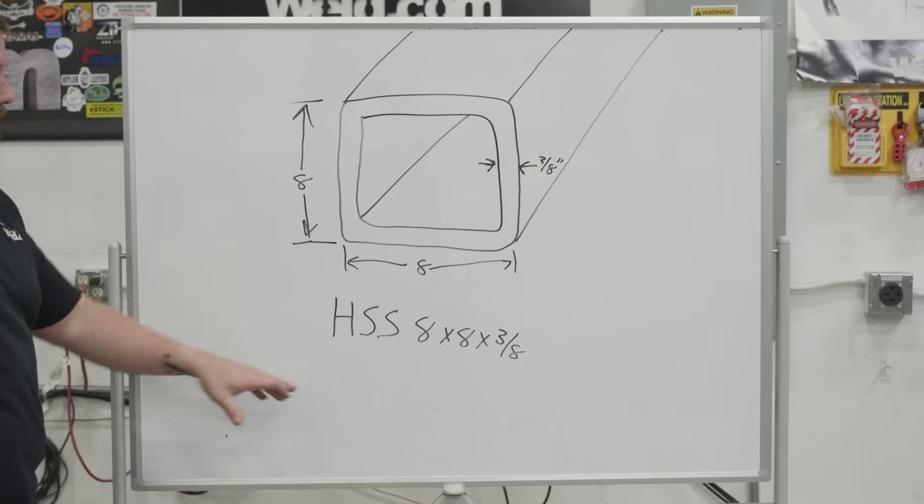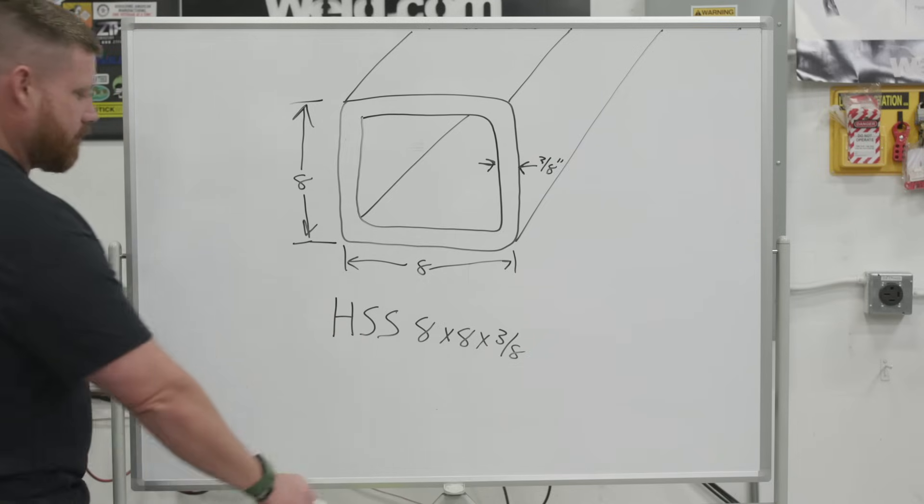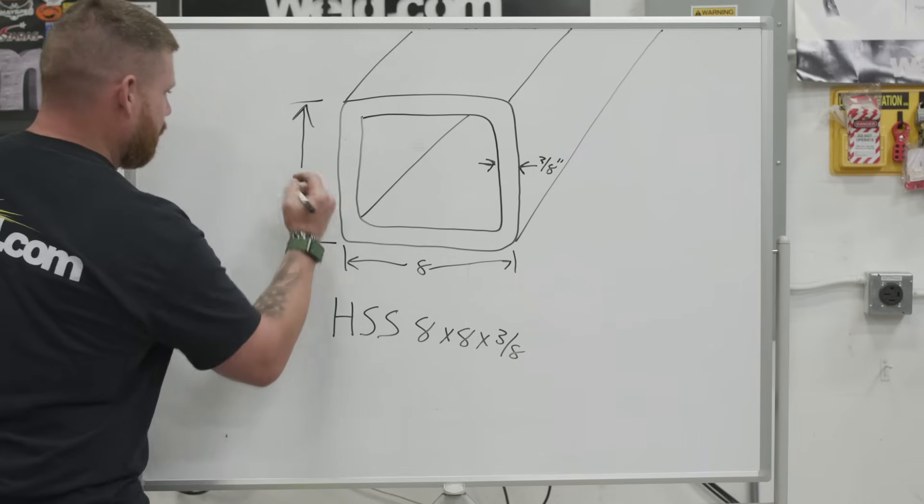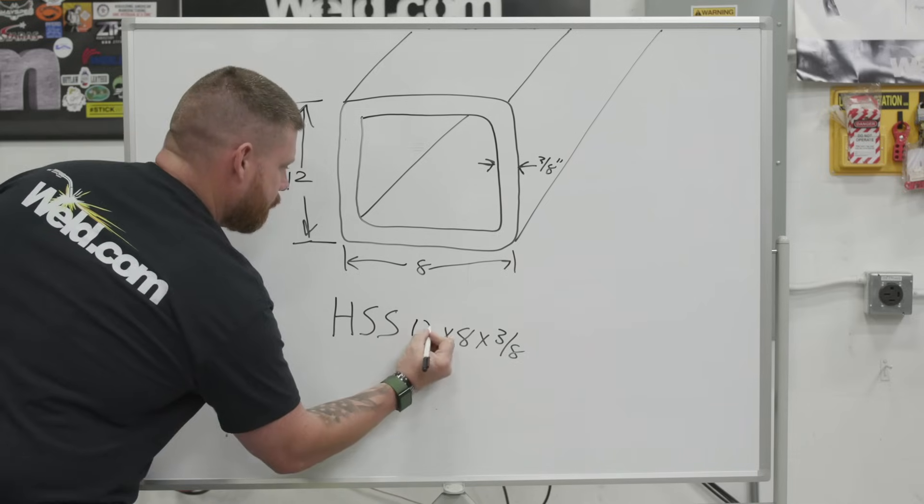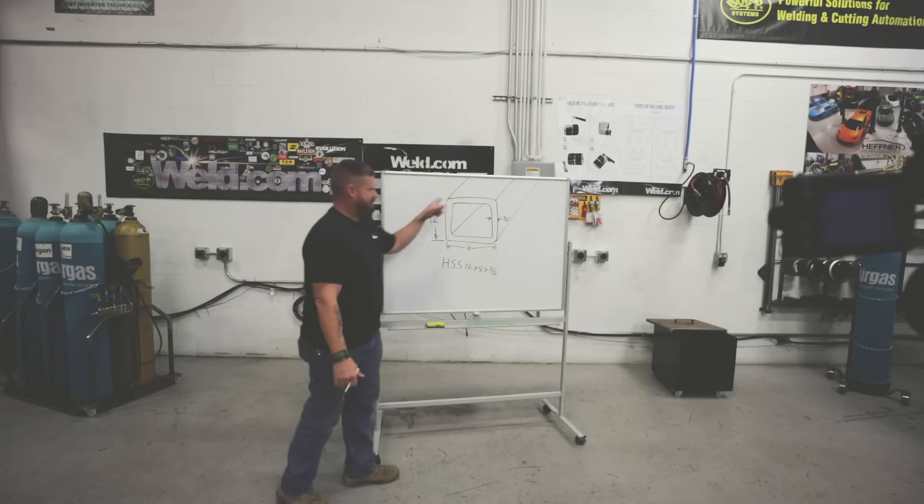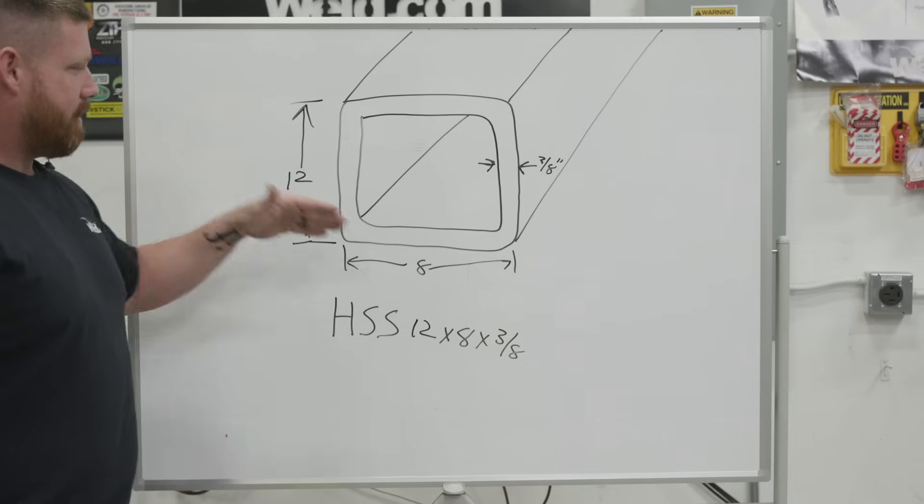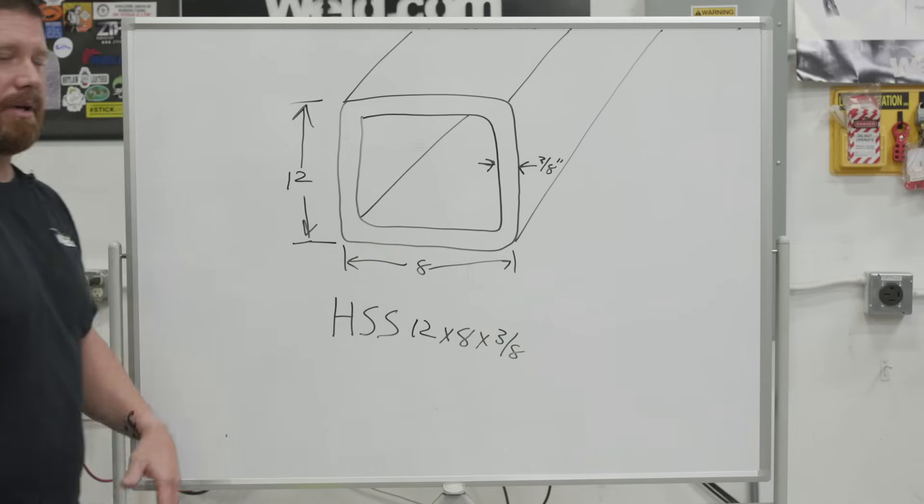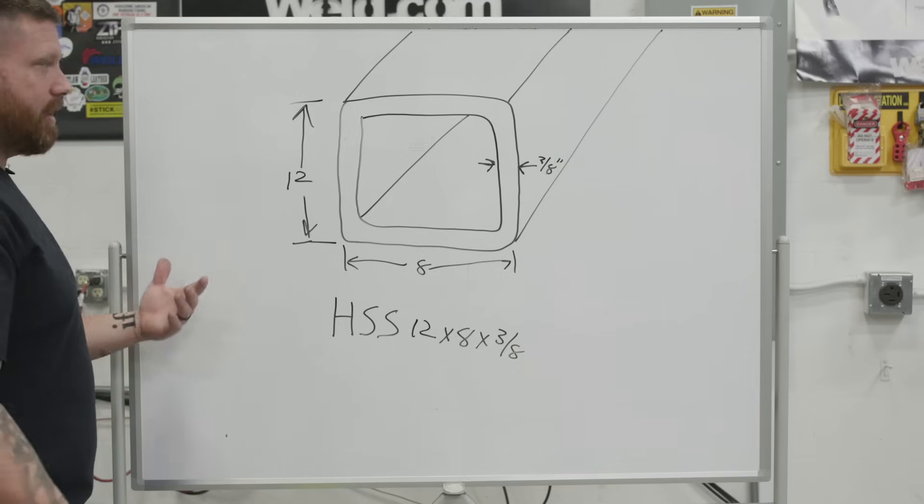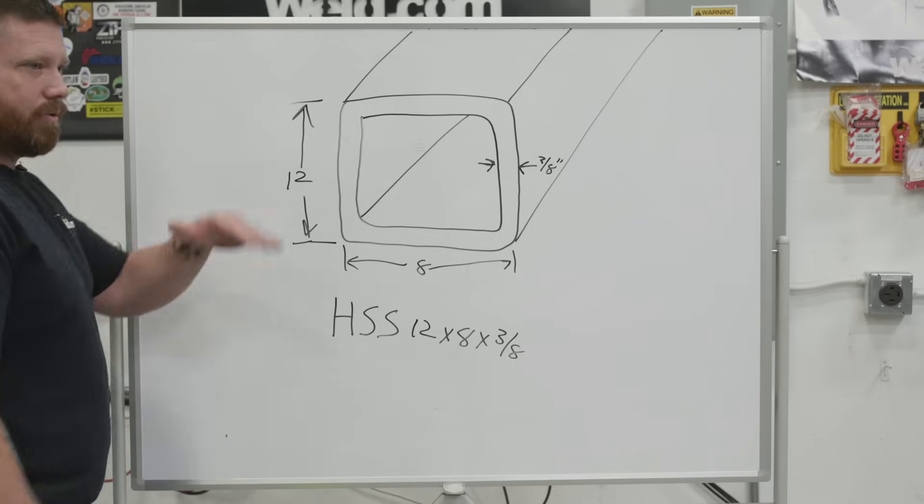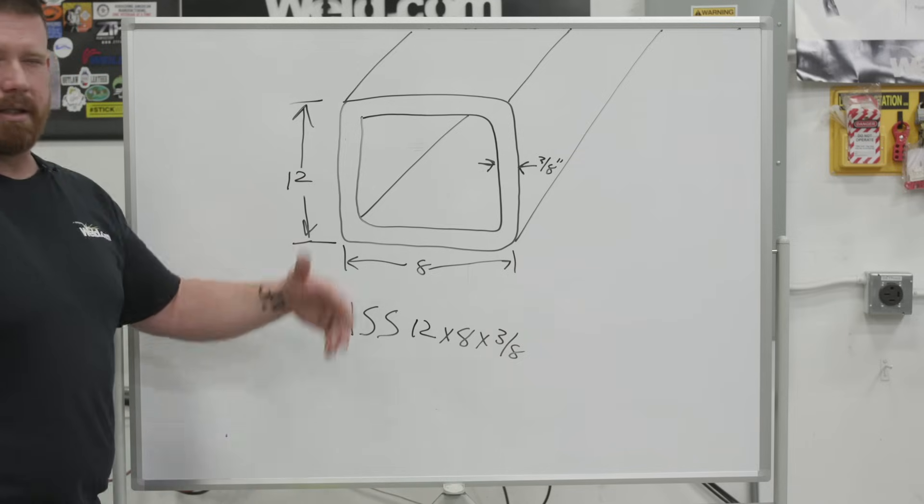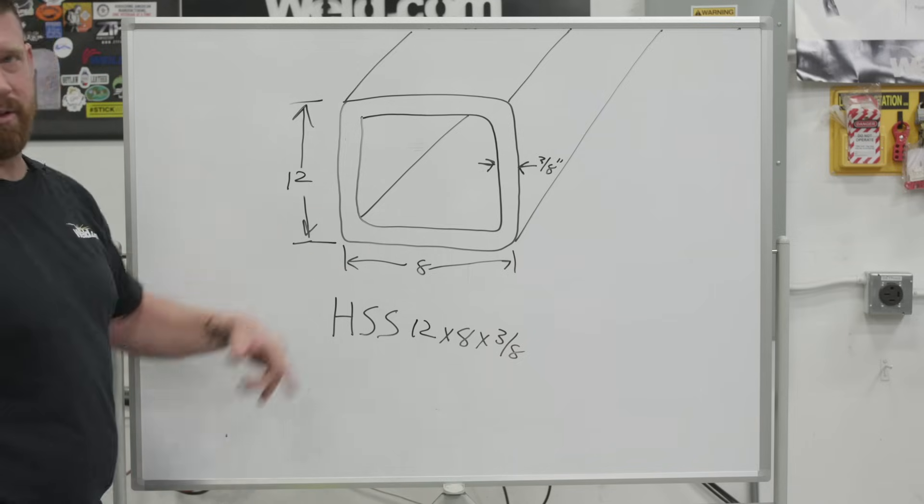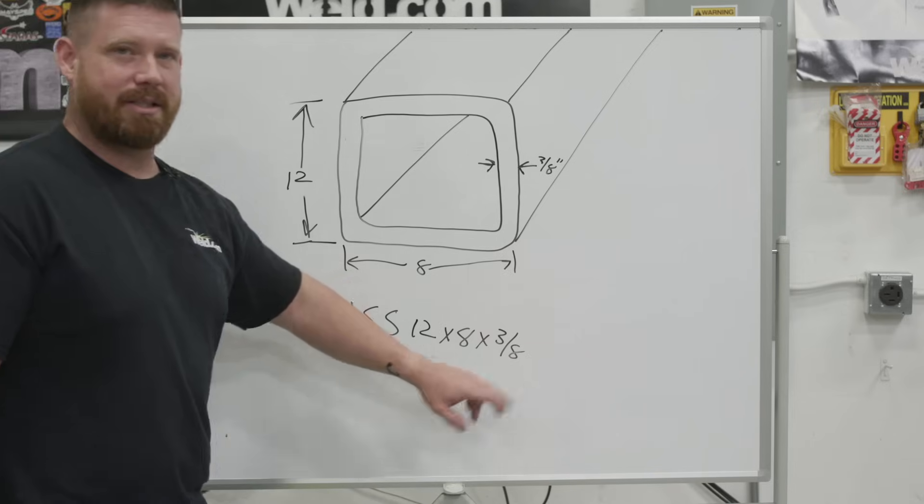So when you see this on a set of prints or you go to order it, you're going to tell them you need a square tube or HSS as it's written on a set of prints. The HSS is hollow structural steel. And then we just dimension it out eight by eight by the thickness, so three eighths. Now you can also get this in rectangular square tube. It's going to be the same thing. HSS hollow structural steel, but let's say one side's a little bit bigger than the other. Let's say that this side is 12 inches. So that's going to be your 12 by eight by three eight. So you can get this as an actual square, or you can get it rectangular. The dimensions are just going to change depending on what you need: height, width, and then wall thickness is going to be how it's dimensioned, how it's ordered.